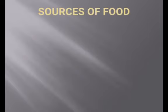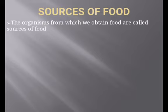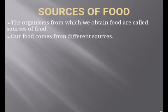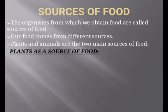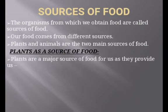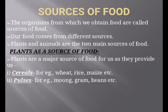Now we come to the next topic: Sources of Food. The organisms from which we obtain food are called sources of food. Our food comes from different sources — either plants or animals — so plants and animals are the two main sources of food. Plants are a major source of food for us as they provide cereals, for example wheat, rice, and maize, which we eat in various forms.